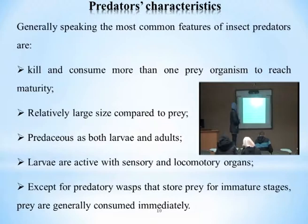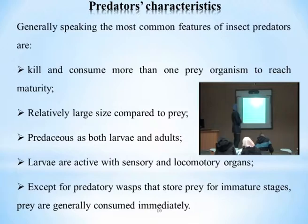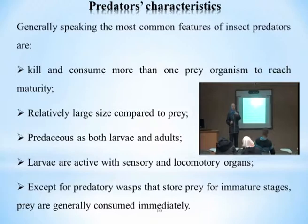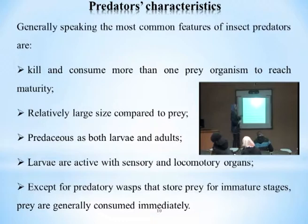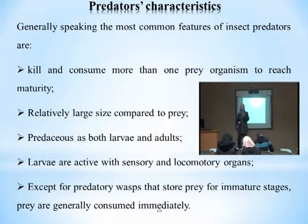What are the major characteristics of predators? Generally speaking, the most common features of insect predators are: they kill and consume more than one prey organism to reach maturity, feeding completely on multiple insects to obtain nutritional needs. They are relatively large in size compared to the prey. Predation occurs in both the larval and adult stages — both stages are capable of predation.